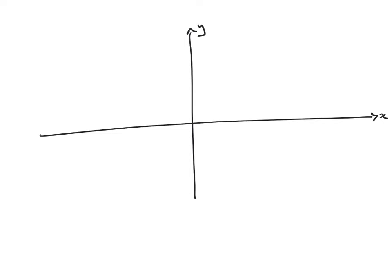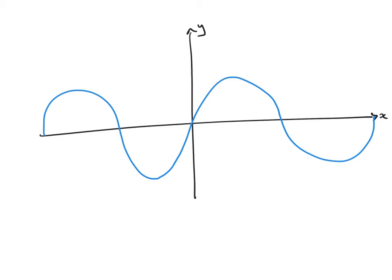I'm going to draw the sine graph big for us. These lines are straight! Our maximum is 1 and our minimum is minus 1. We know this is π, this is 2π, this is π over 2, 3π over 2. On the negative side it's going to be exactly the same but negative. We should all be really confident with this.